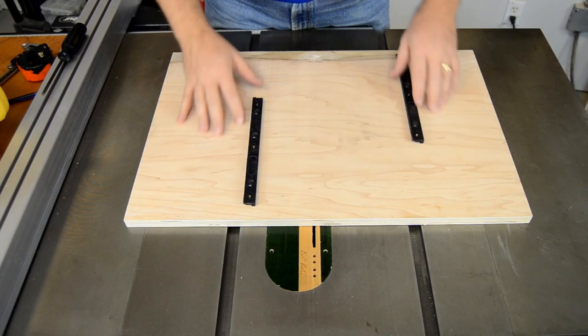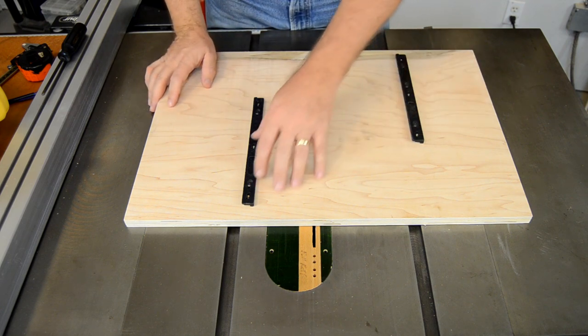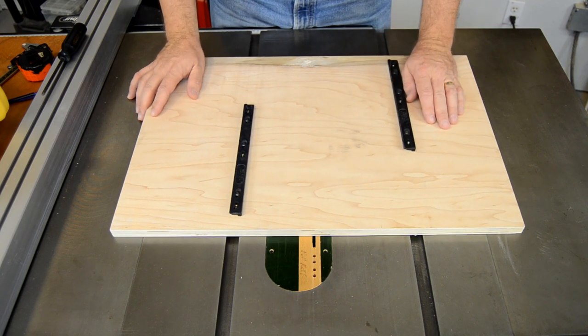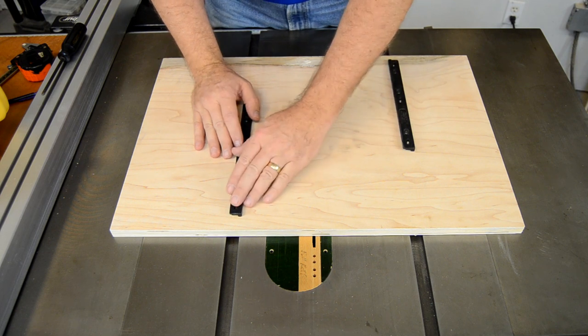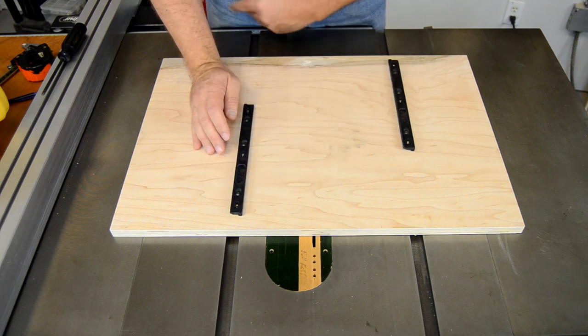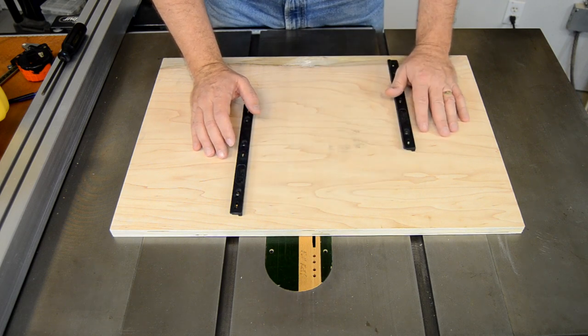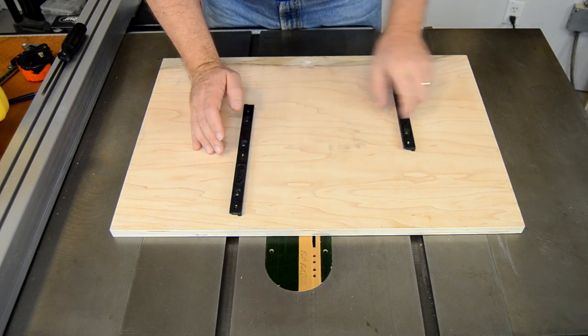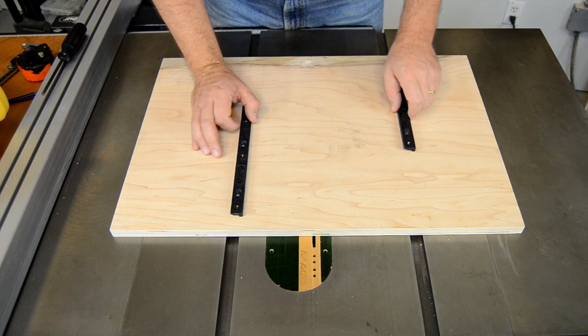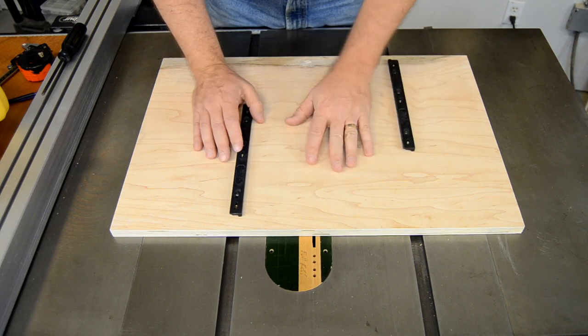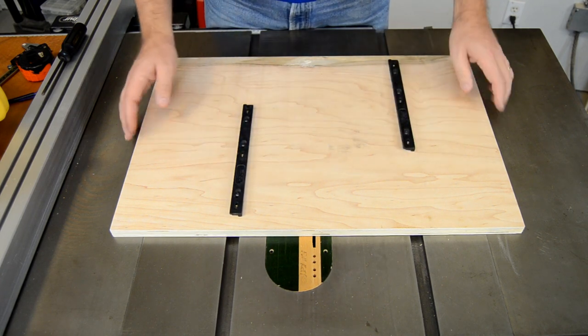Now I've secured the zero plays to the underside of my jig board. But as you can see, there's a pretty fair amount of play here, and that's on purpose. We need that to be able to line everything up.